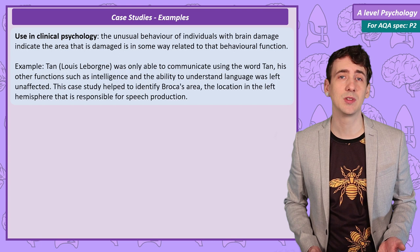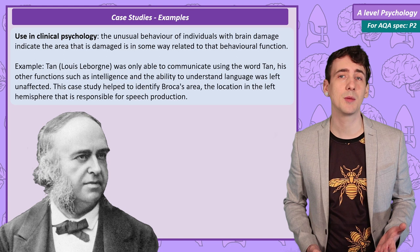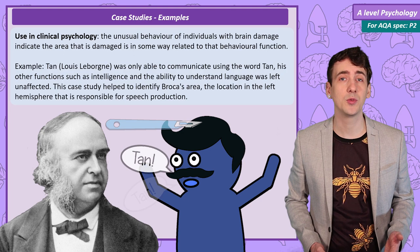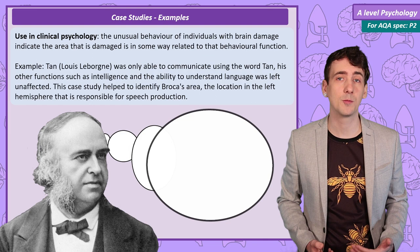Paul Broca researched a patient referred to as Tan. This patient could only say the word 'Tan', and work while Tan was alive was combined with post-mortem dissection of his brain after his death. This work led to the identification of Broca's area, a part of the brain responsible for speech production.